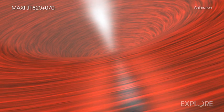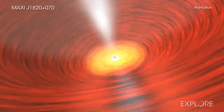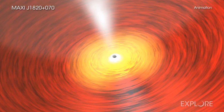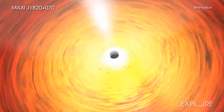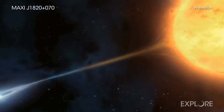The black hole in MAXI J1820+070 has a mass about eight times that of the Sun. This makes it a so-called stellar-mass black hole formed by the destruction of a massive star. The companion star orbiting the black hole has about half the mass of the Sun.